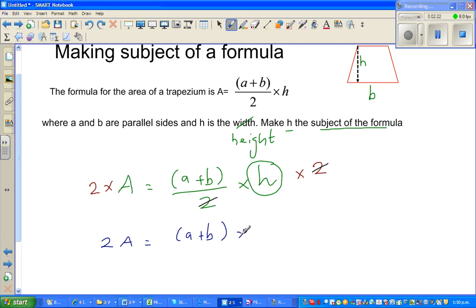So I will divide both sides by (a plus b). If I divide this side by (a plus b), I divide the other side by (a plus b). So these get cancelled.